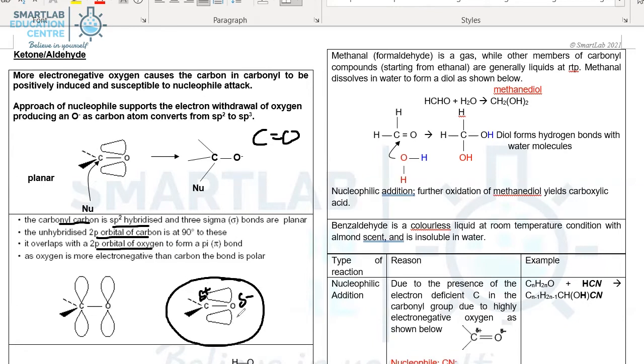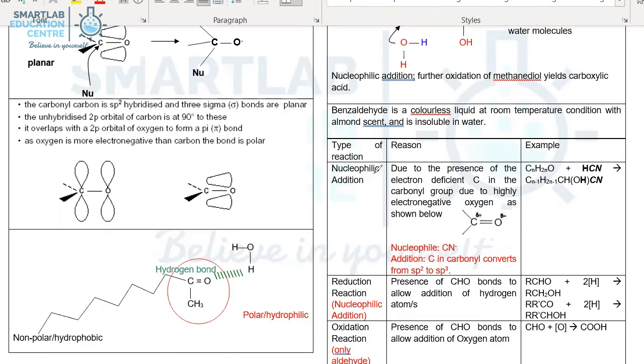Hence ketone and aldehyde is capable of undertaking nucleophilic substitution. Firstly, the carbon is actually delta plus, so it is able to actually attract a nucleophile. Thereafter, the carbon, which is sp2 hybridized, would become sp3 hybridized, hence nucleophilic addition. Let us take a look at the three chemical reactions that aldehyde and ketone can undertake.